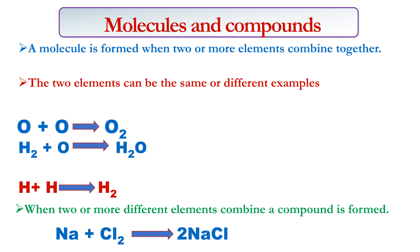A molecule is formed when two or more elements combine together. The two elements can be the same or they can be different. So when you combine one oxygen plus another oxygen, you form an oxygen molecule. In this case, the two elements are the same.